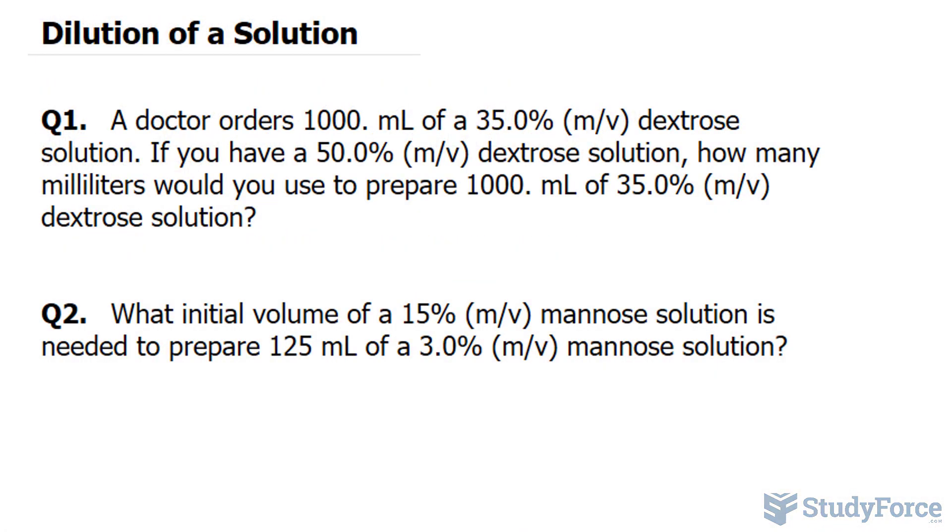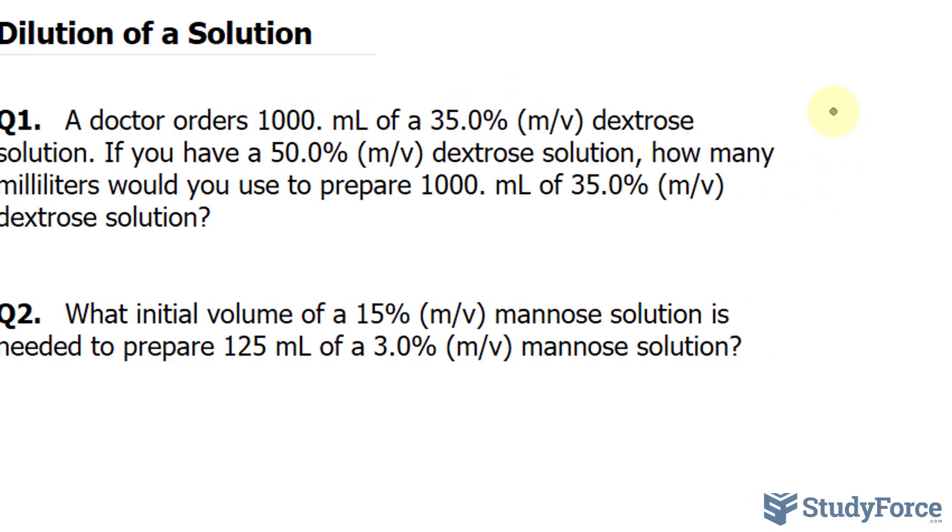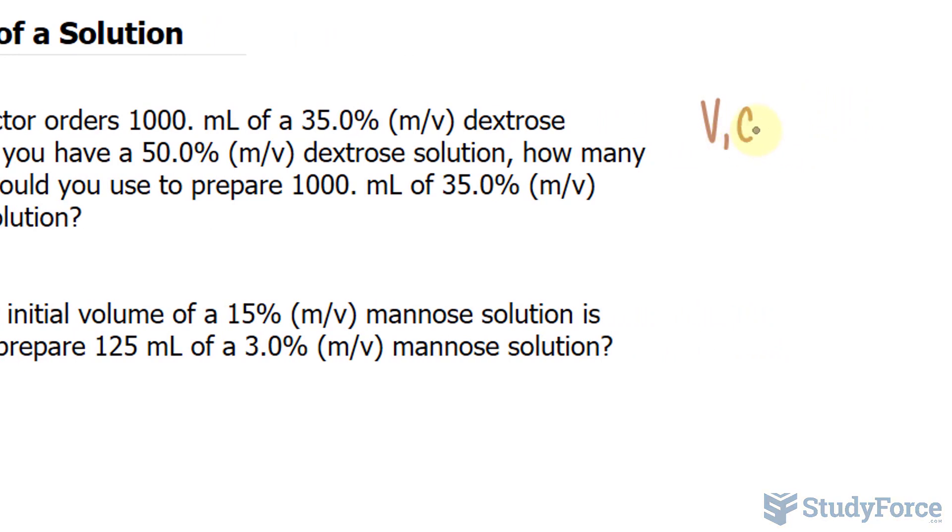To do this problem effectively, you have to recognize that 35.0% mass per volume is technically a concentration. So if we consider this a concentration and we consider this the volume, we can use the formula V1C1 is equal to V2C2.